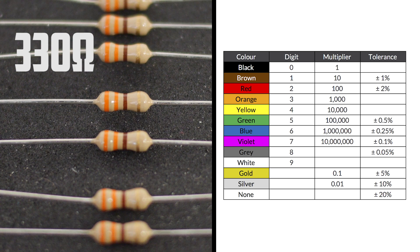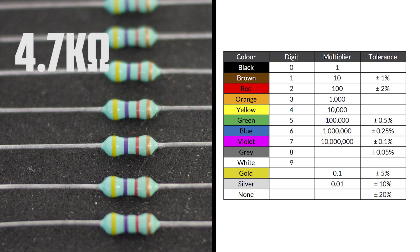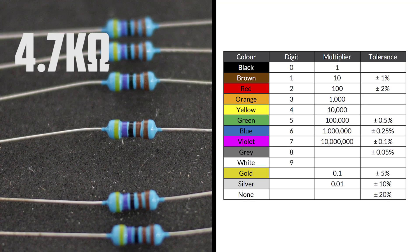Here are 330 ohm resistors. The 4 band is orange, orange, brown. The 5 band is orange, orange, black, black. Here are 4.7 kilo-ohm resistors. The 4 band is yellow, purple, red. The 5 band is yellow, purple, black, brown.